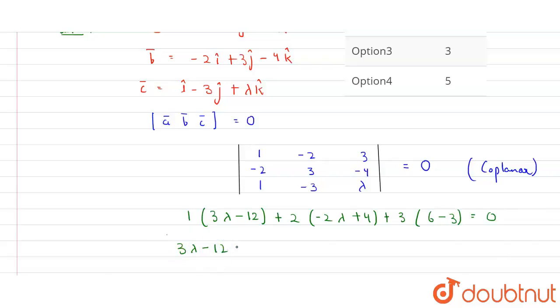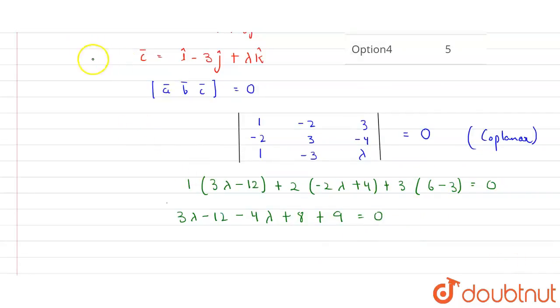And here it will be minus 4 lambda. And here three multiplied by three, that is nine, equals zero. Now put the lambda values on one side and constant values to the other side. Here it will be 3 lambda minus 4 lambda, that is minus lambda overall. And here minus 12 plus eight will be minus 4, minus 4 plus 9 will be plus 5, equals zero.